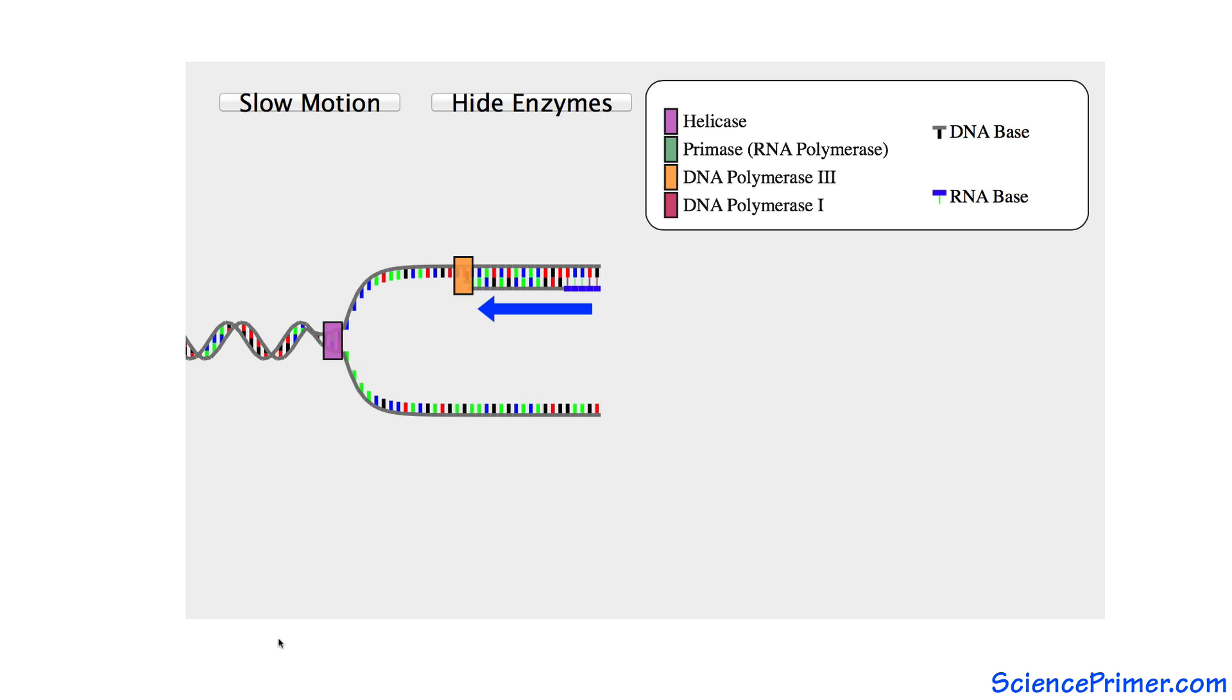In one direction, DNA is replicated as a continuous strand called the leading strand. Replication on the other strand occurs by the creation of many short segments. This is the lagging strand.